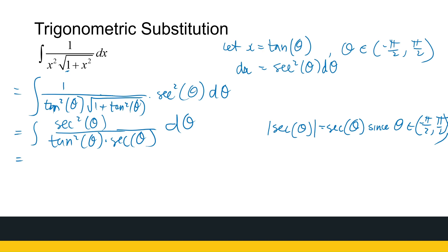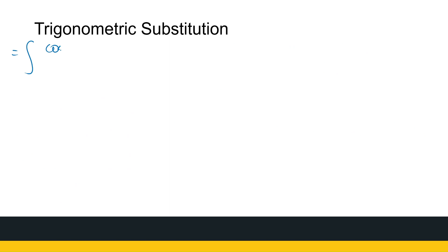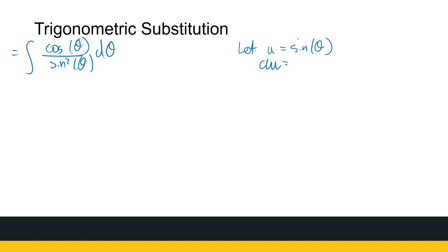One of the sec factors cancels. Converting to sine and cosine to clarify: we have 1 over cos theta times cos squared theta over sine squared theta d theta, which gives the integral of cos theta over sine squared theta d theta. To integrate this, we make the substitution u equal to sine theta, so du equals cos theta d theta, which is present in the integrand. This transforms it to the integral of 1 over u squared du.